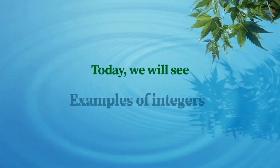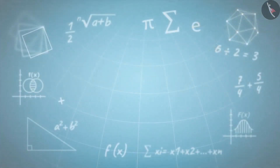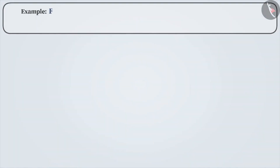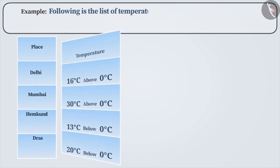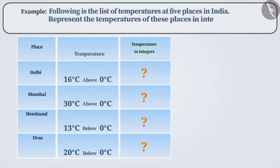Today, we will see some examples of integers. Example 1: Following is the list of temperatures at 5 places in India. Represent them as integers.